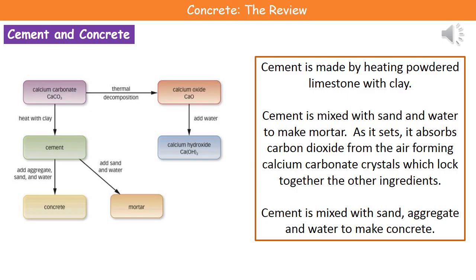Once we've got calcium carbonate, we can do a huge range of things with it. We can carry out thermal decomposition to make calcium oxide, and if we add water to calcium oxide we make calcium hydroxide, which we can use in limewater and so forth. If we go back to our calcium carbonate and heat it up with clay, we're going to generate cement.